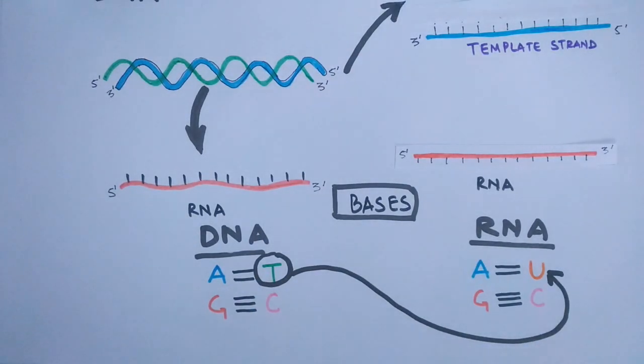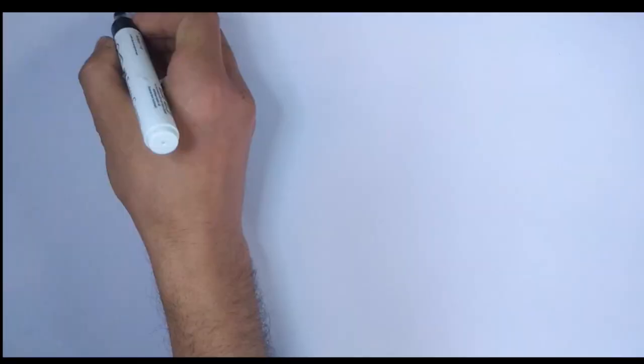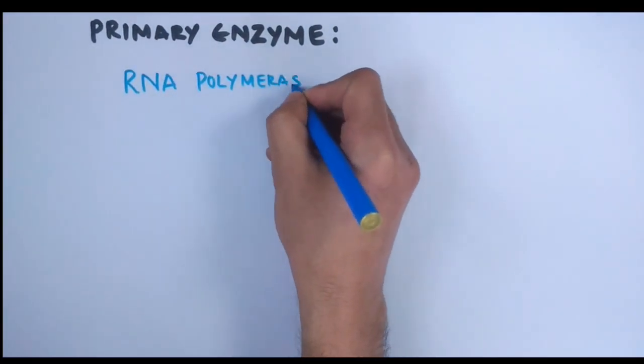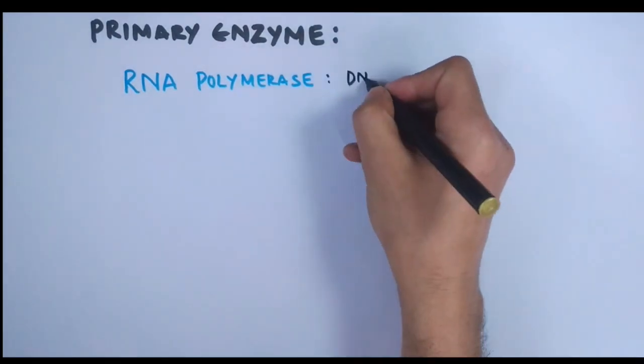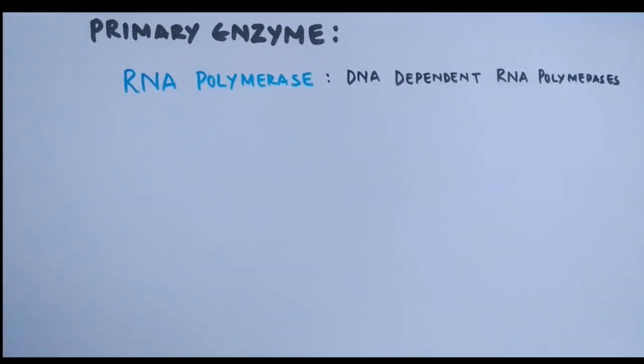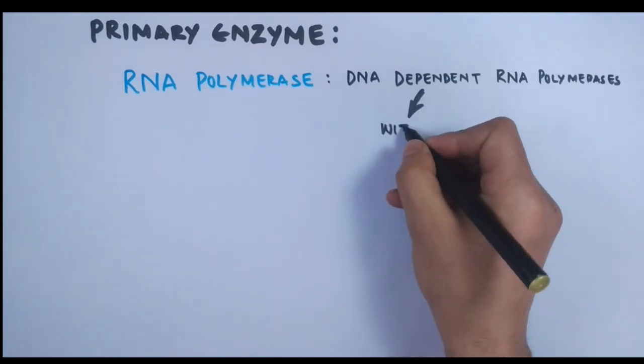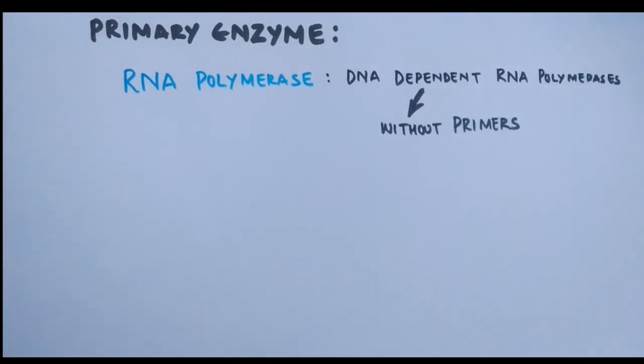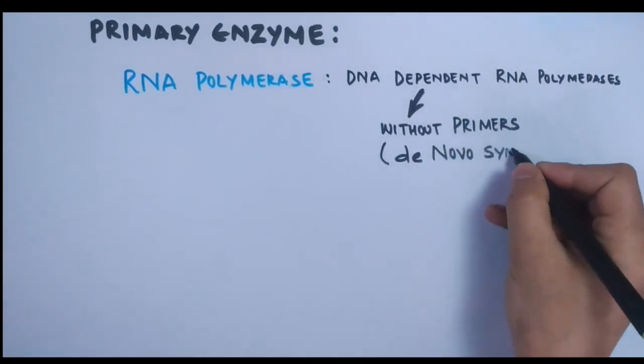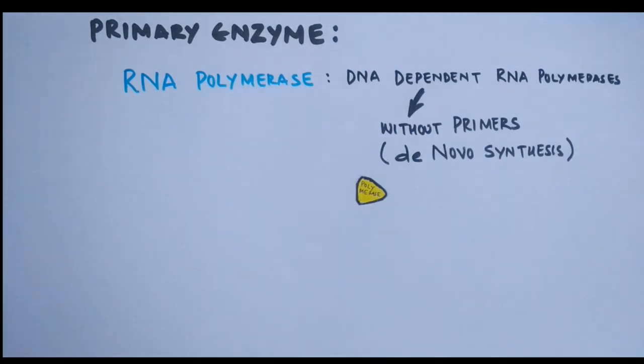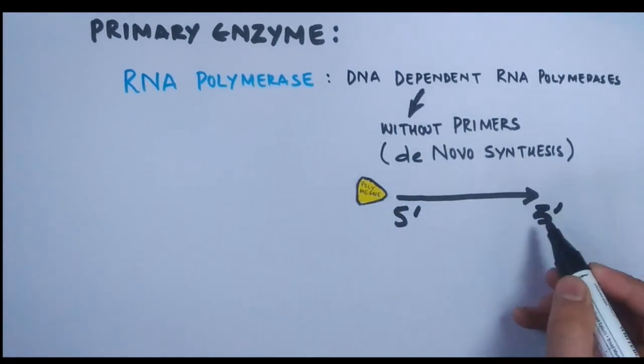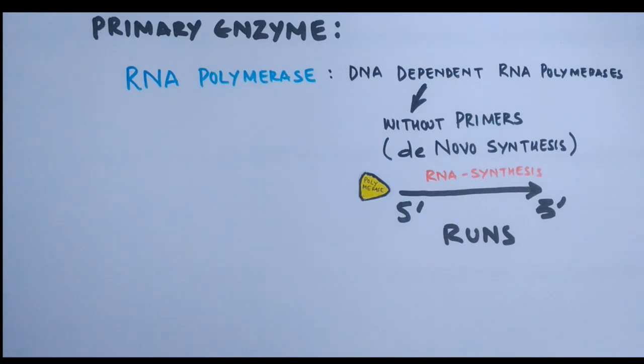The primary enzyme that drives transcription is RNA polymerase, which is DNA-dependent RNA polymerase. This enzyme drives RNA synthesis without primers, that's de novo synthesis. This RNA polymerase runs 5 prime to 3 prime direction.